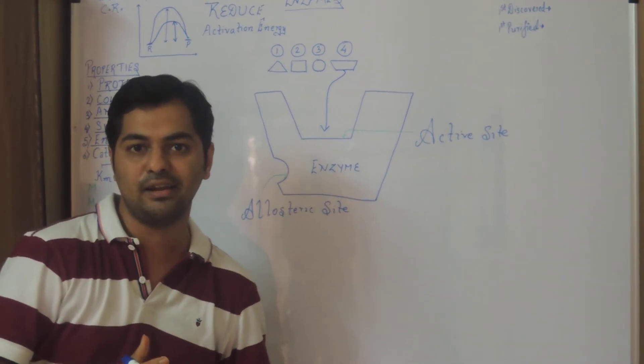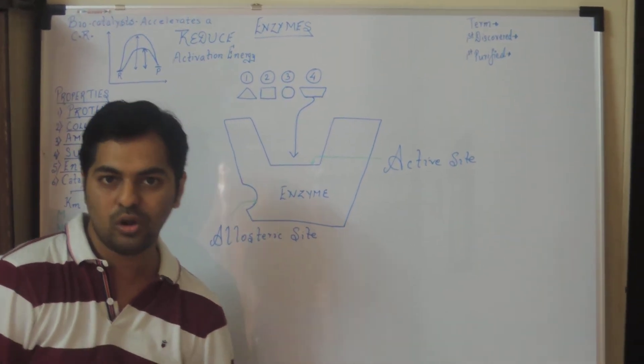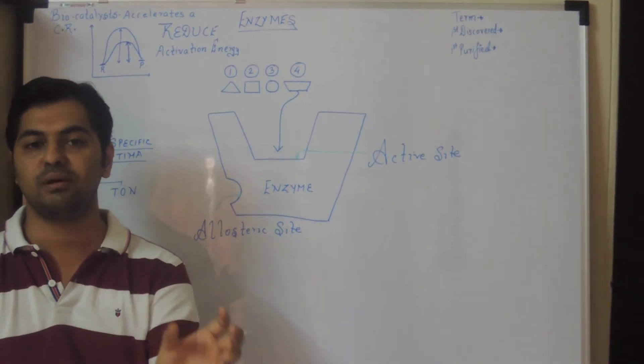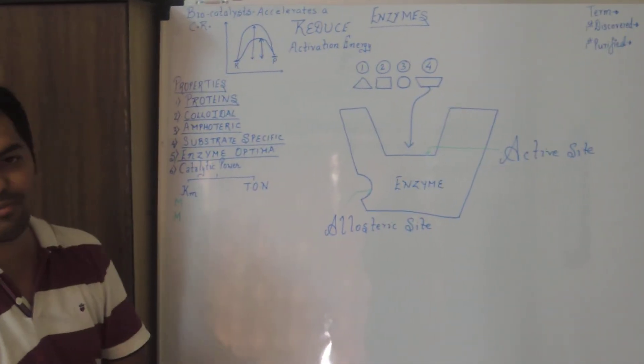Which we call it as denaturation. Even at low temperature enzymes get inhibited. So there has to be specific optimum temperature and pH condition in which the enzymes function the best. That is known as enzyme optima.